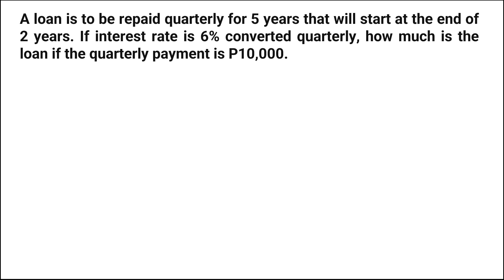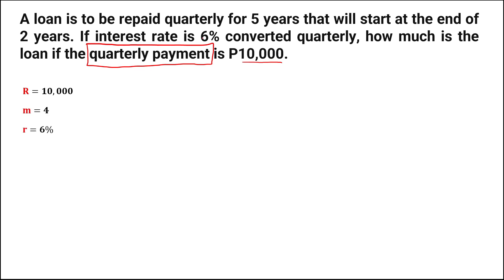First, we need to list all the given. So 10,000 pesos is the regular payment or the periodic payment, R. Since quarterly payment, the periods of interval M is equal to 4. Then for the interest rate, that's 6% converted to decimal, which is 0.06.